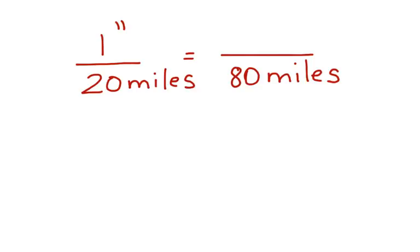In this first ratio, we're comparing inches to miles. And in the second ratio, we're comparing inches, which we don't know, x, to miles.